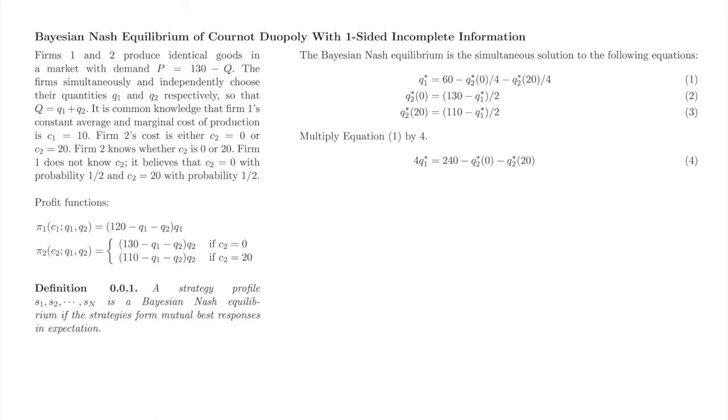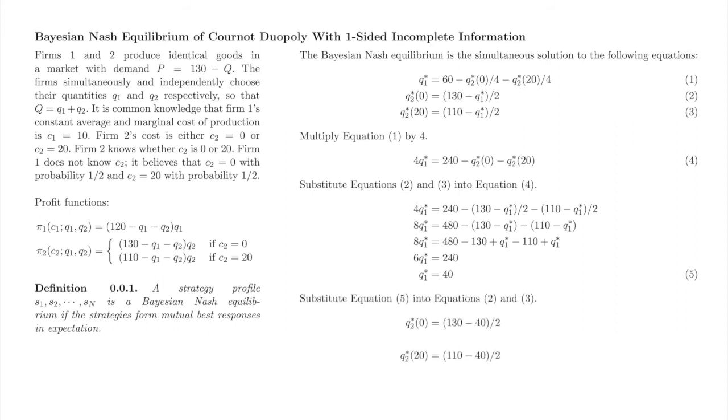Clear denominators from equation 1 to obtain equation 4. Now, substitute equations 2 and 3 into equation 4. Solve this equation for q1 star. Now, substitute equation 5 into equations 2 and 3. Solve for q2 star of 0. Solve for q2 star of 20. Equations 5, 6, and 7 form the Bayesian Nash equilibrium of this game.